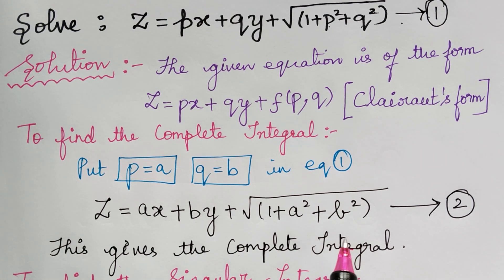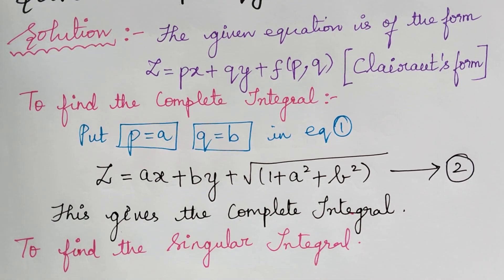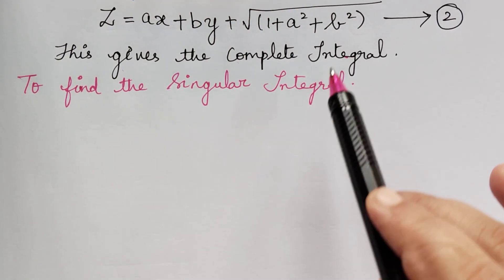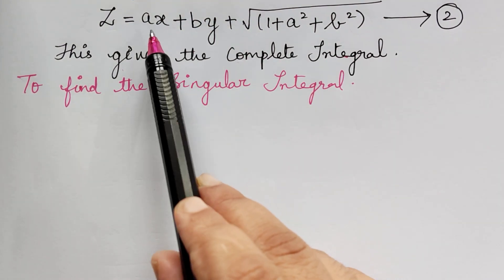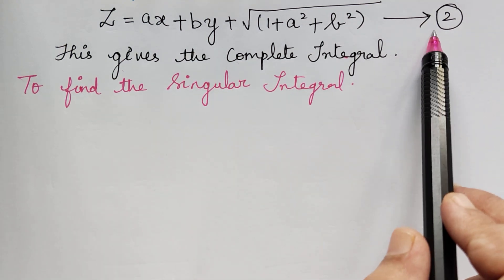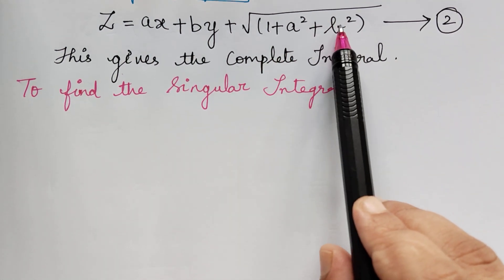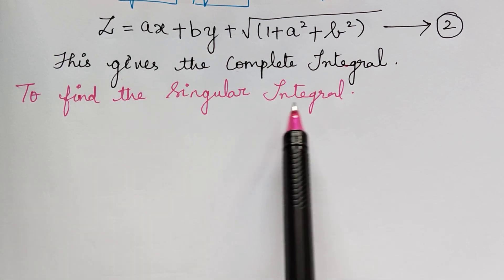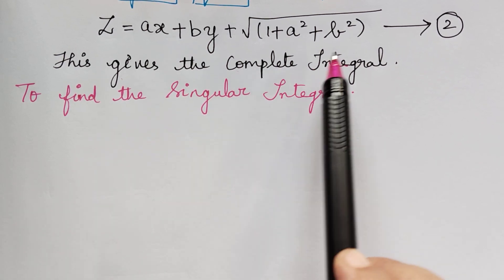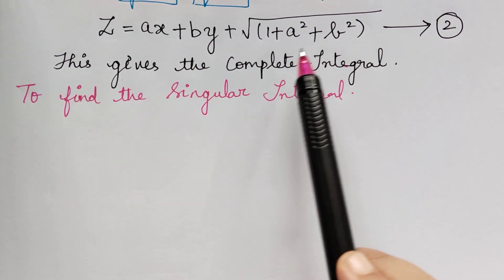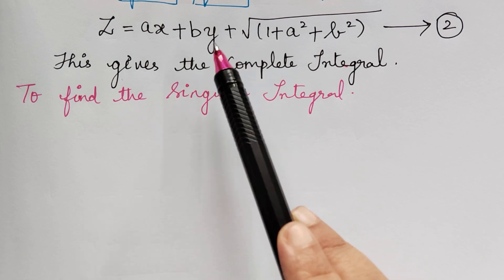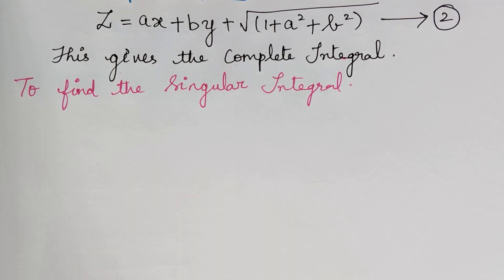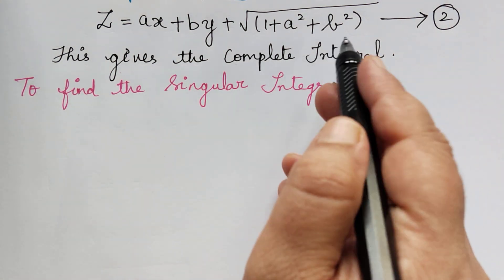The next step is to find the singular integral. In order to find the singular integral, we have to eliminate the arbitrary constants a and b from equation 2. For this, we differentiate equation 2 partially with respect to a and b.